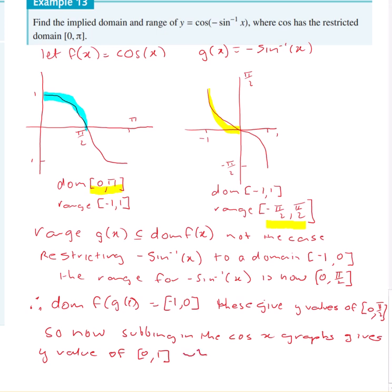I'll change the pen back, which is the range. So, domain of cos of negative sine to the negative 1 of x is equal to minus 1 to 0. Range is 0 to 1.